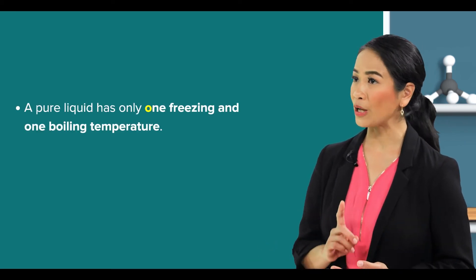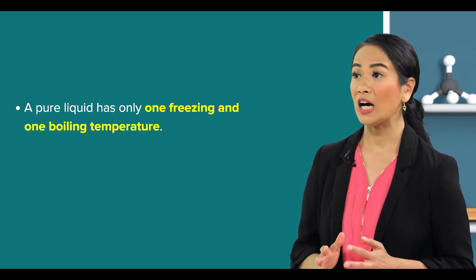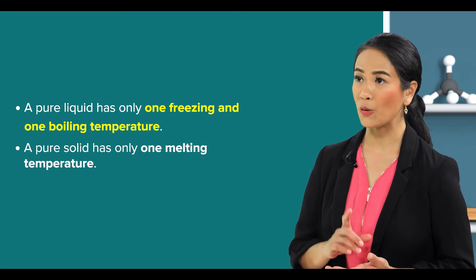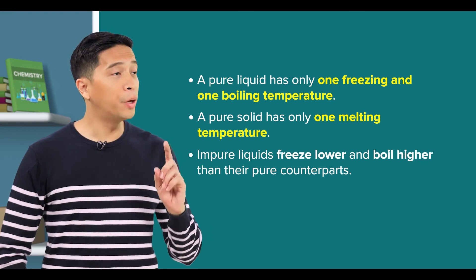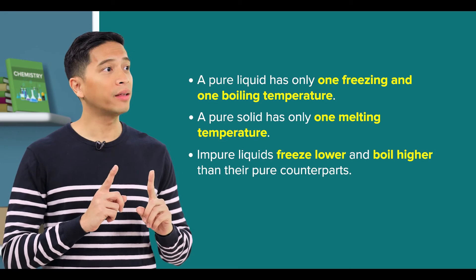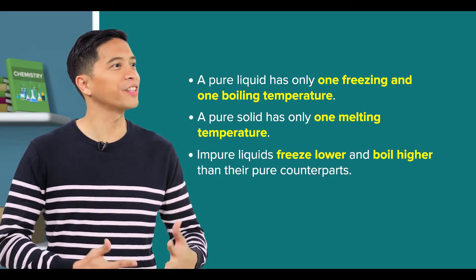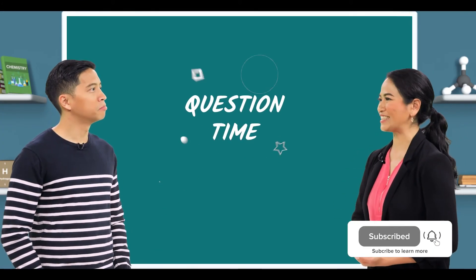Hmm, got it! So let me summarize what we discussed so far. A pure liquid has only one freezing and one boiling temperature. By extension, a pure solid has only one melting temperature. Okay, and impure liquids freeze lower and boil higher than their pure counterparts. That's right! Now let's try a simple question. Sure!